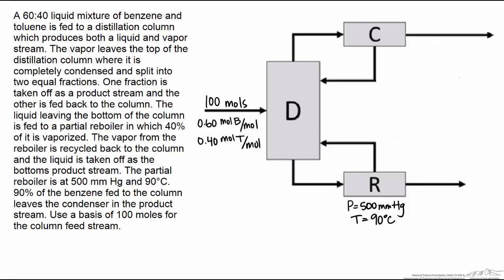So the first thing we're going to do is label our knowns and unknowns. So let's call this first stream, the vapor coming out of the condenser N1. Since we know that it's split into two equal parts, we can call this stream 0.5 N1 and this stream 0.5 N1. We don't know any of the compositions, all that we know is that they're the same. So we'll write everything in terms of benzene. So this is Z sub B and 1 minus Z sub B.